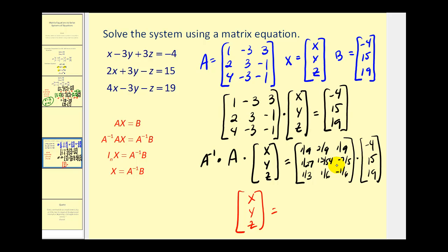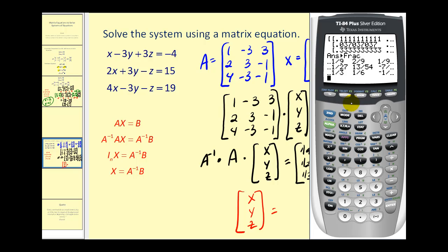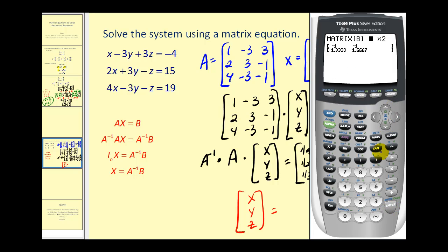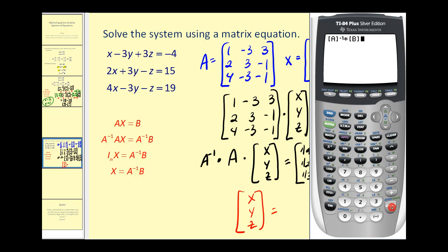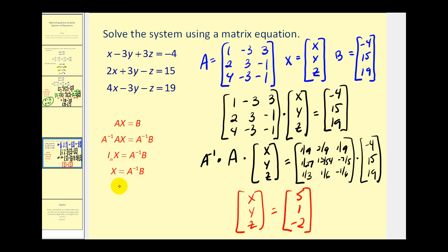We're going to find this product on the calculator. We need to enter the constant matrix into matrix B: press 2nd, matrix, go over to edit, down to matrix B, press enter. It's a 3 by 1, and the constants are negative 4, 15, 19. Now let's go back to the home screen and find A inverse times B: 2nd, matrix, select matrix A, press the inverse key, times matrix B — 2nd, matrix, select B — then press enter. And so we have the matrix 5, 1, negative 2. So the solution to this system is X equals 5, Y equals 1, and Z equals negative 2.